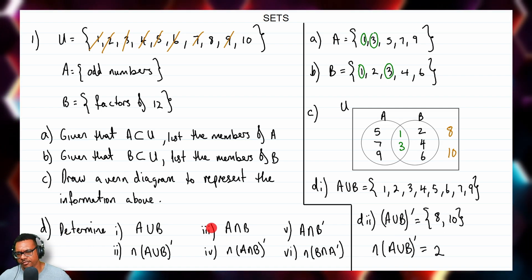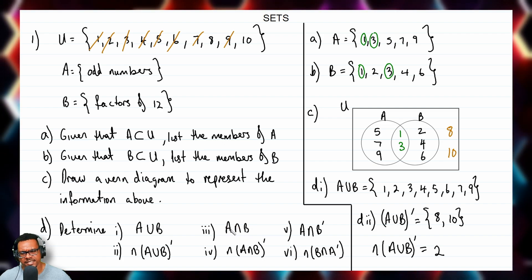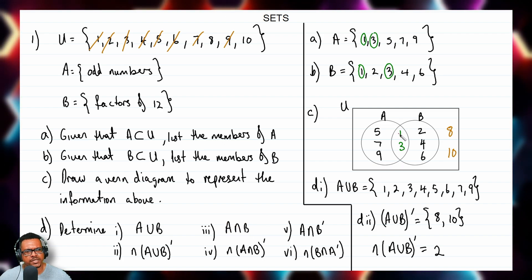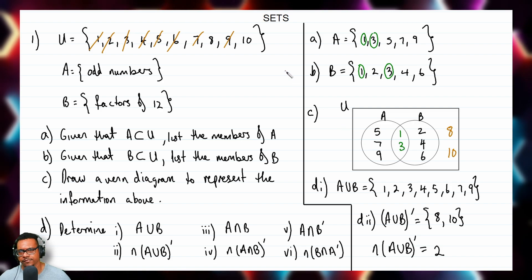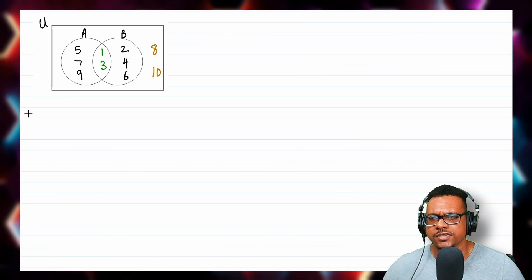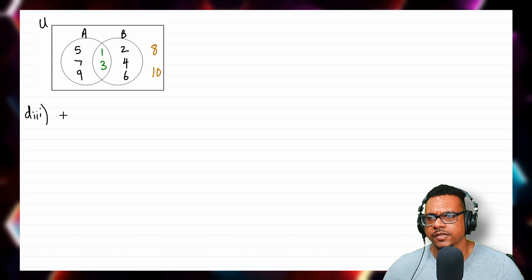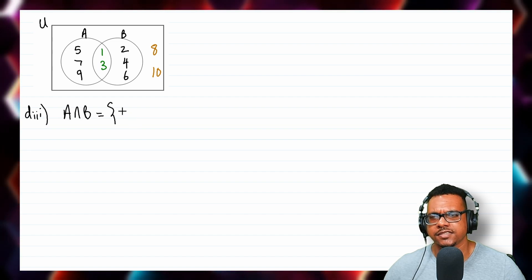For D part 3, we want the elements in A intersect B — the elements that A and B have in common with each other. A intersect B = {1, 3}.